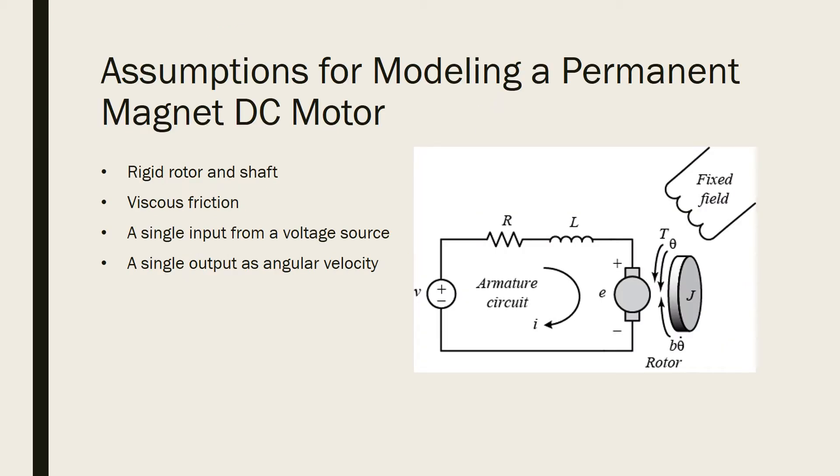System assumptions include the rotor and shaft are assumed to be rigid bodies. The system operates under viscous friction. A single input from a voltage source goes into the system. A single output as angular velocity goes out of the system.